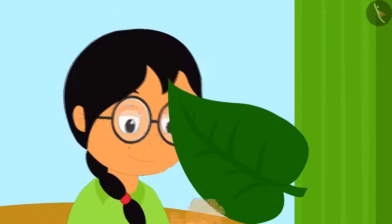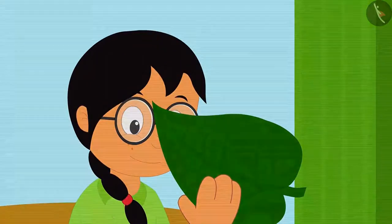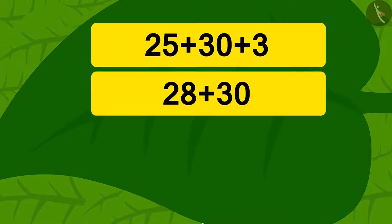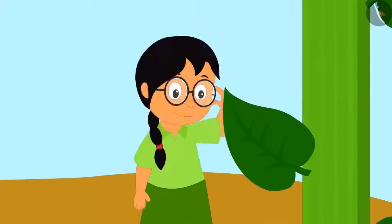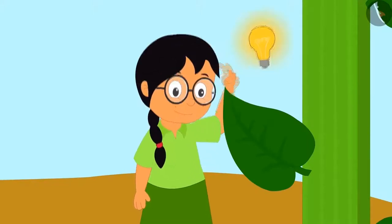Children, can you find the answer to this puzzle mentally? Yes, using the method of addition we have learned, we can solve this quickly. First, we will add 3 to 25 and get 28. Now if we add 28 to 30, we get 58. See how quickly we solved it!